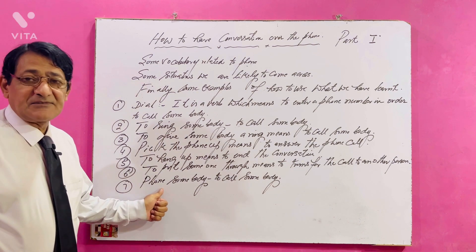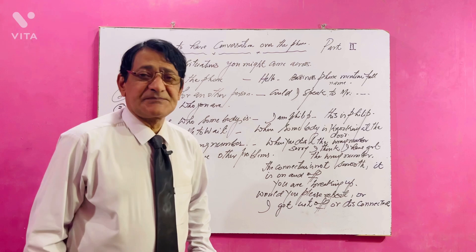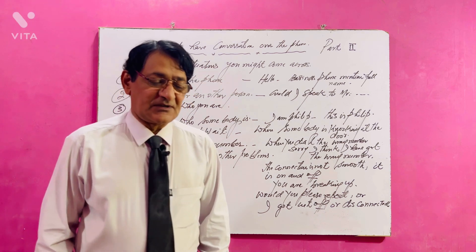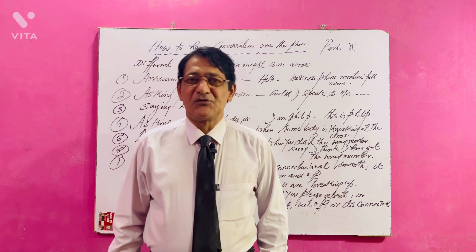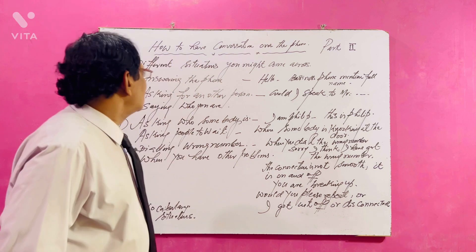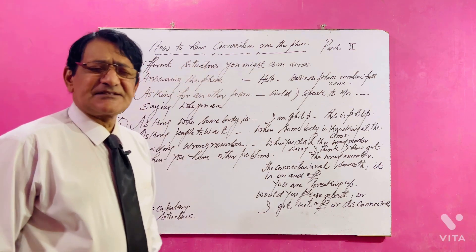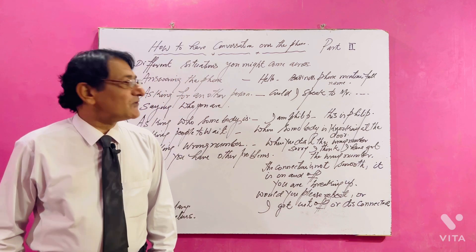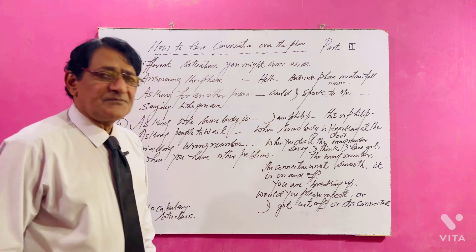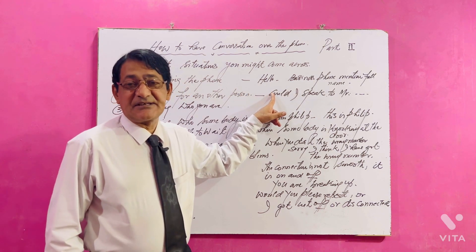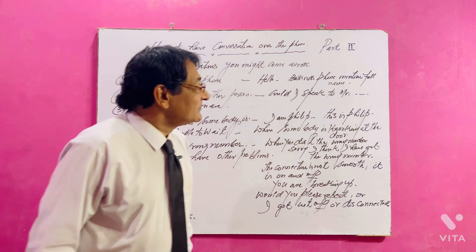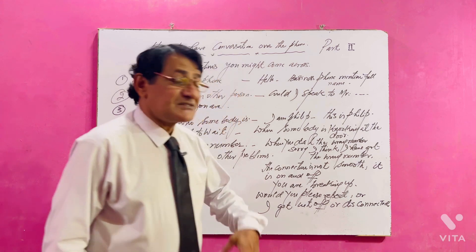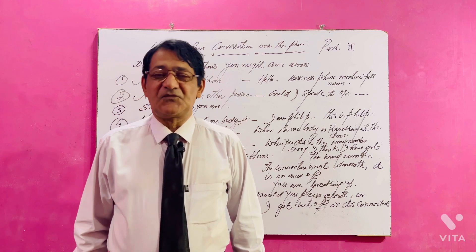'Phone somebody' means to call somebody. Now in Part 2, we are going to learn about different situations we are likely to come across while having a phone conversation in English. When answering the phone — your phone rings and you pick it up — in informal situations you can say 'Hello,' but for a business call you should mention your full name, like 'David' or 'Philip.'